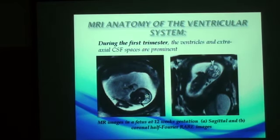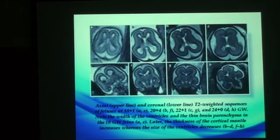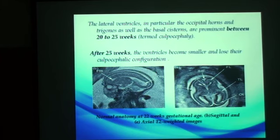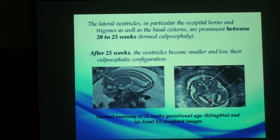Regarding the MRI anatomy of the ventricular system: during the first trimester, the ventricles and the extra-axial CSF spaces will be prominent. Starting from the 18th to 20th weeks of gestation, the ventricular size remains normal, yet the cortical mantle increases in thickness relative to the ventricular size. From the 20th to the 25th week of gestation, the occipital horns enlarge, giving a colpocephalic configuration. After 25 weeks, the ventricles become smaller and they lose the colpocephalic configuration, giving normal proportions.